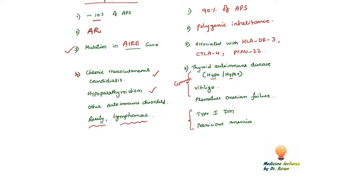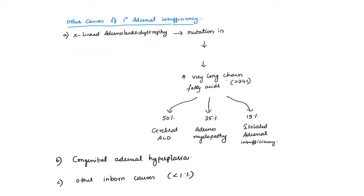The less common associations are type 1 diabetes mellitus and pernicious anemia. Coming to the other genetic causes of primary adrenal insufficiency: